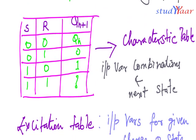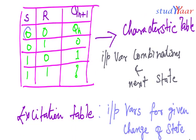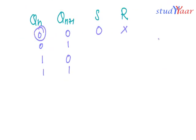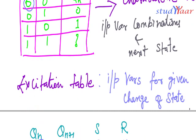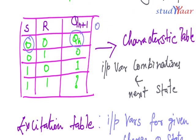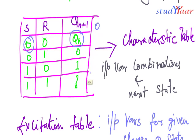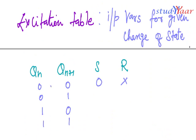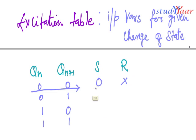When Q(n) is zero, Q(n+1) is the same as Q(n), so you get zero. The zero-zero condition gives me zero and the zero-one condition also gives me zero. So the transition from zero to zero requires either S=0, R=0 or S=0, R=1. Therefore I say the condition is S=0 and R=don't care.